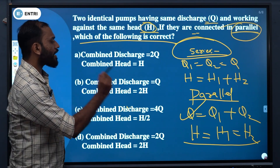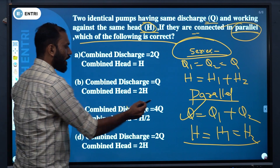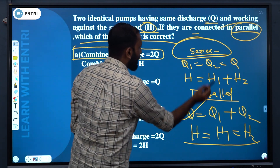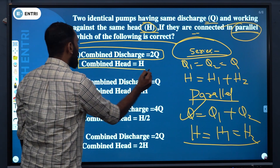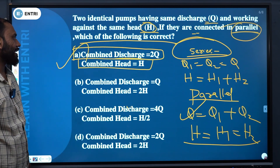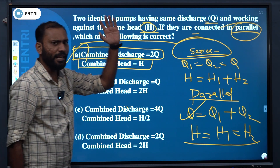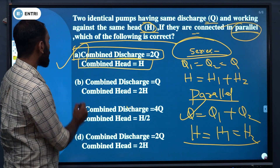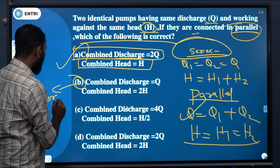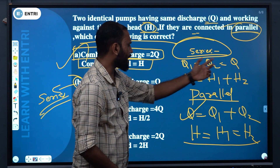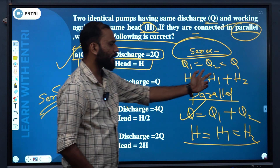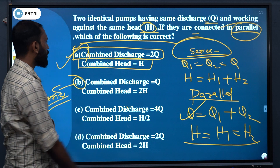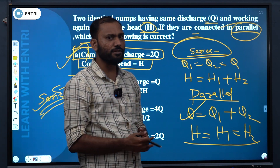For a parallel connection, the head remains the same. So, option A is correct. In a parallel connection, the discharge doubles while the head stays the same. In a series connection, the discharge stays the same and the head doubles — that would be option B. So for parallel, option A is correct. Series connection and parallel connection in multi-stage pumps is very important.